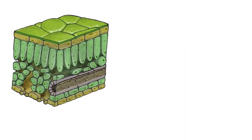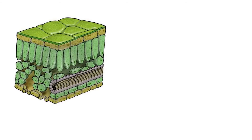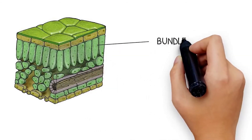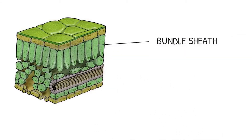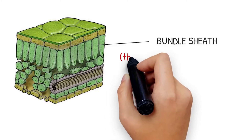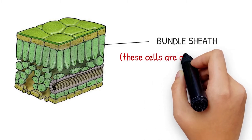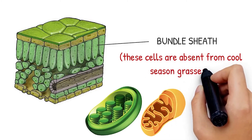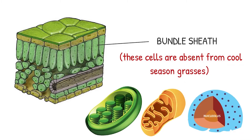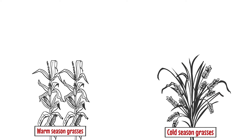The differences start in the leaves. Warm season grasses have a thick wall around the vascular cells, also known as a bundle sheath. These cells are packed with chloroplasts and other organelles to ensure that the overall rate of photosynthesis is rapid.